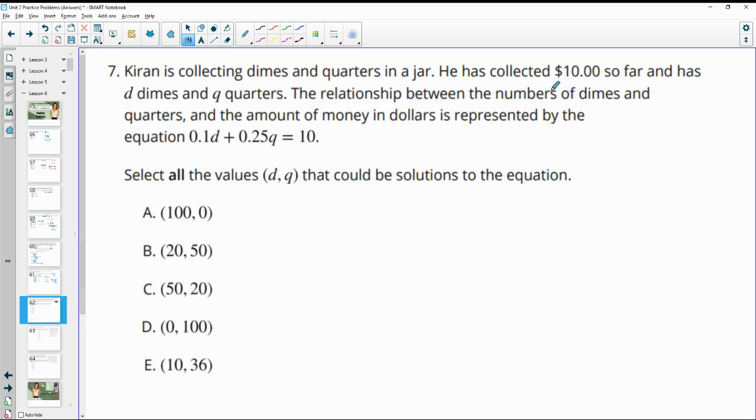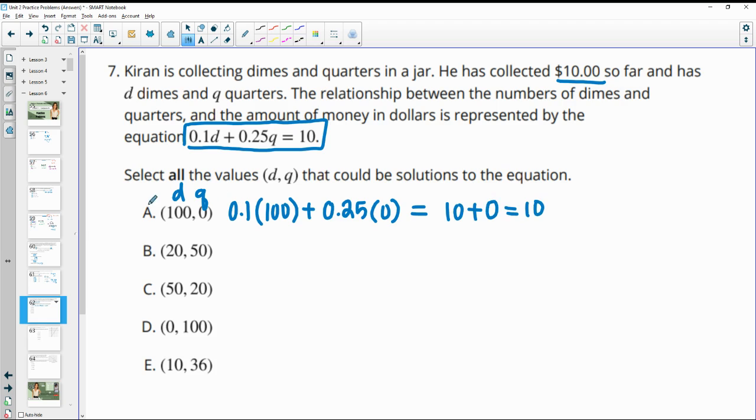Number 7, Kieran is collecting dimes and quarters in a jar. He collected $10 so far in dimes and quarters. The relationship of the dimes and quarters is represented by this equation. Select all values, D, comma, Q, so dimes and quarters. So the first number is dimes. The second number is quarters. That could be solutions to this equation, meaning that they equal out to $10. So we would be taking 0.1 here and multiplying by 100 for the number of dimes that he has and then 25 cents times 0 quarters. So 0.1 times 100 is 10 and then $0 in quarters equals $10. So this would be a true statement.